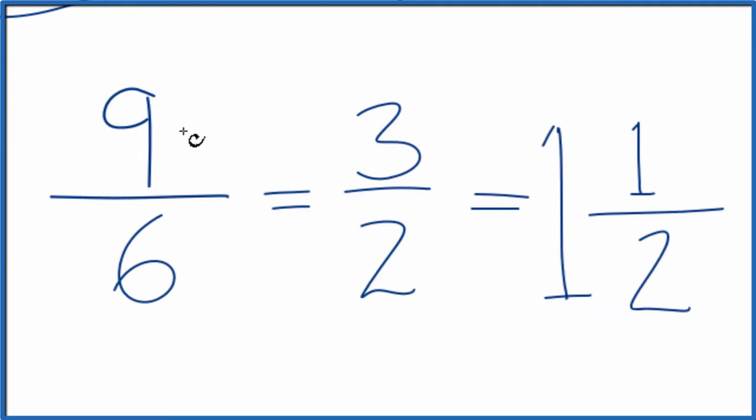And these are all equivalent. If you divide 9 by 6, 3 by 2, or 1 and 1 half, you end up with 1.5. So we call those equivalent fractions.